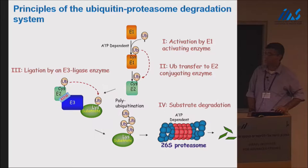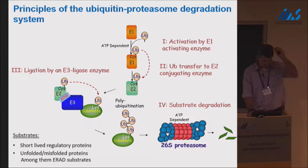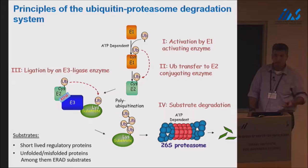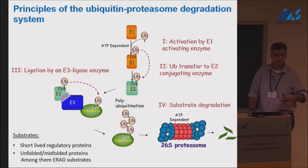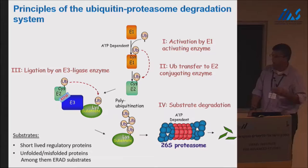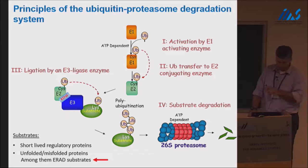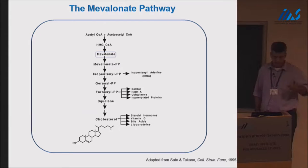If the process of ubiquitin transfer repeats itself, you can get polyubiquitylation, leading to degradation by the proteasome, since only the polyubiquitin chain is recognized by specific receptors on the proteasome. The substrates include regulatory short-lived proteins such as cell cycle proteins, and a large group of unfolded or misfolded proteins — among them the ERAD substrates — since this is a major machinery for protein quality control within cells.